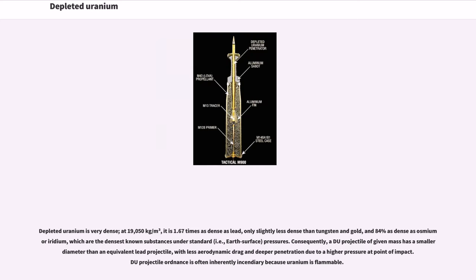Depleted uranium is very dense, at 19,050 kg per cubic meter — 1.67 times as dense as lead, only slightly less dense than tungsten and gold, and 84% as dense as osmium or iridium, which are the densest known substances under standard Earth's surface pressures. Consequently, a DU projectile of given mass has a smaller diameter than an equivalent lead projectile, with less aerodynamic drag and deeper penetration due to a higher pressure at point of impact.